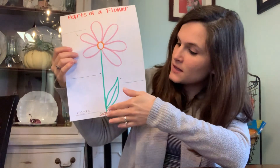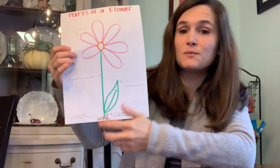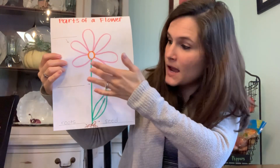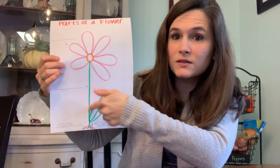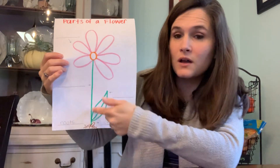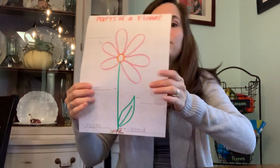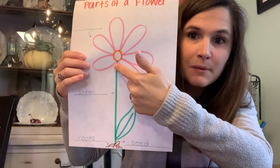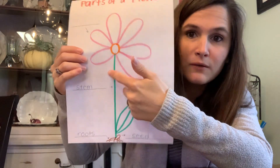Next, it starts to sprout, and we'll see our stem start to grow. That's the long piece up here. I'm going to write 'stem' for the tall green stalk that comes up out of the ground.